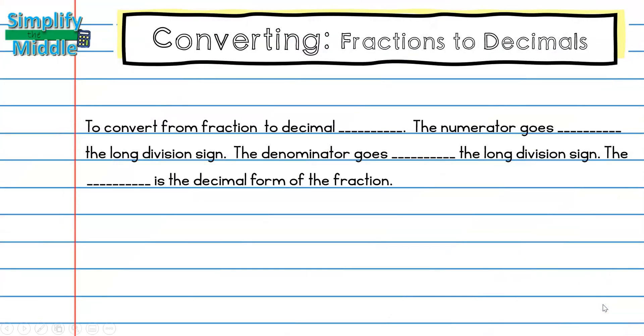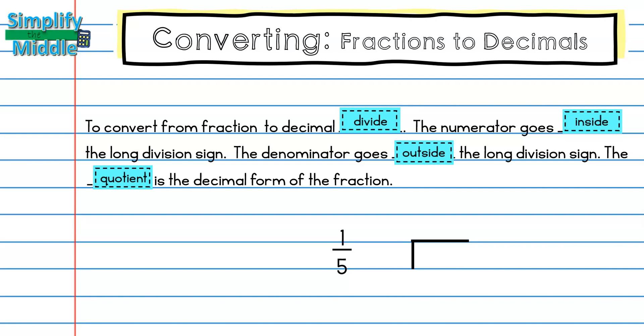Let's recap. To convert from a fraction to a decimal, we'll divide. The numerator goes inside the long division sign and the denominator is going to go outside the long division sign. The quotient is the decimal form of the fraction.